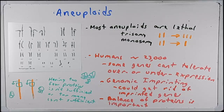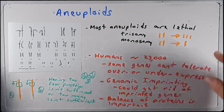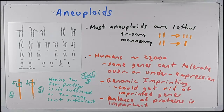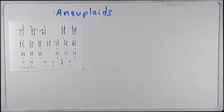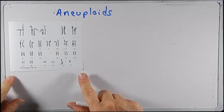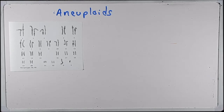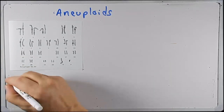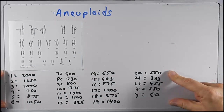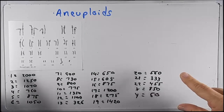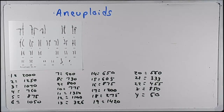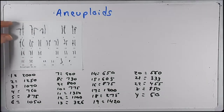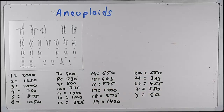Most aneuploids are lethal, but that implies that some survive. I'm going to talk about which ones can survive and which would never make it to a live birth. I'm focusing on this karyotype — it has the correct number of chromosomes — and I'd like to indicate approximately how many genes are on each chromosome. Some of the larger chromosomes have the most genes, and some of the smaller chromosomes have fewer genes. In general the longer chromosomes have more genes on them.